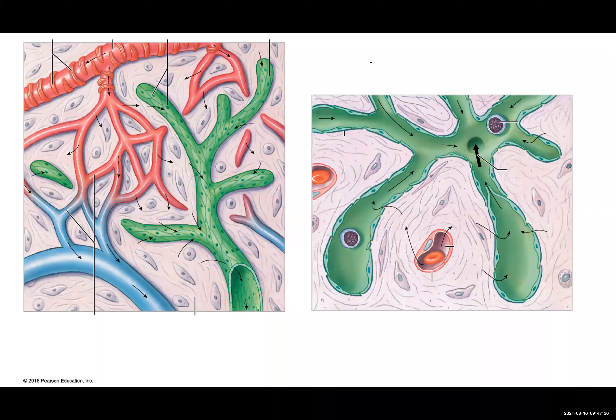We are taking a look here at the lymphatic capillary, which is basically the beginning of the lymphatic system. We see that the lymphatic system is represented by green, and we see that the network of capillaries and vessels basically parallels the blood vessels and blood capillaries. Over here, we're looking at the blood capillary.